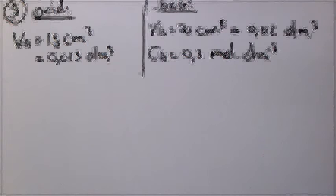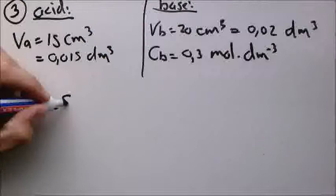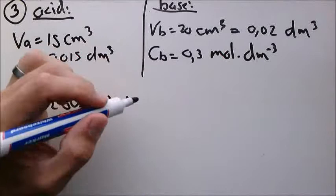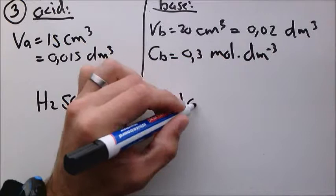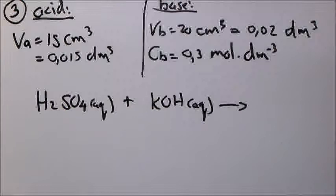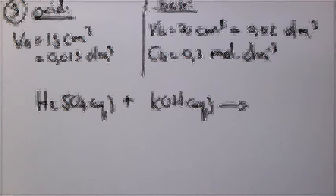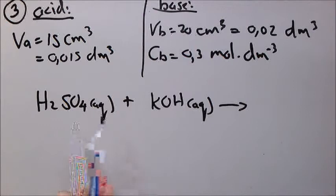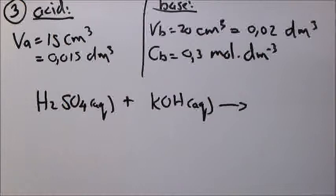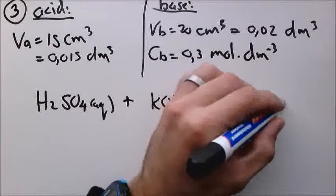In order to calculate the concentration we have to understand the actual neutralization — what happens here. So we have sulfuric acid reacting with potassium hydroxide, being neutralized to form water and the salt. The salt would be potassium sulfate. Sulfate is 2 negative and potassium is 1 plus, so we need 2 of those — K₂SO₄.